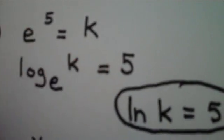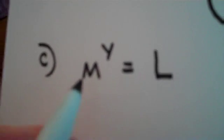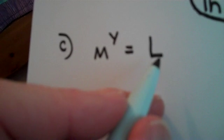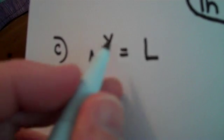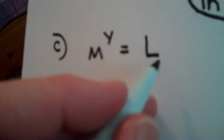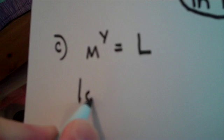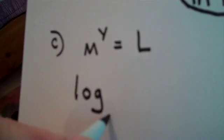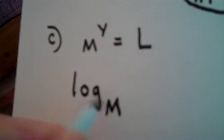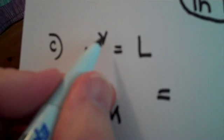And my final statement here: M to the y power equals L. Well, this is currently written in exponential form. If I want to convert this to log form, I write log. The base here is M, so we emulate the base here: log base M. What used to be the exponent now becomes the answer.